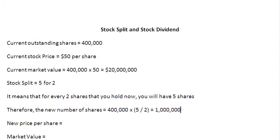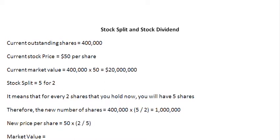What is going to happen to the price? Since the number of shares have increased from 400,000 to 1 million, the price is going to drop in the same proportion. So we take the current stock price of $50 per share and multiply it by the ratio of old shares to new shares — that is 2 divided by 5. So 50 times 2 over 5 gives us $20 per share as the new price.